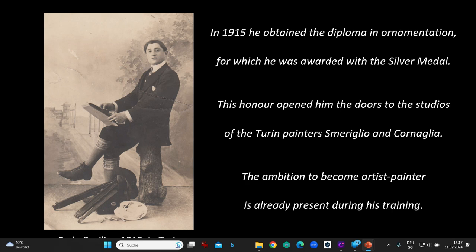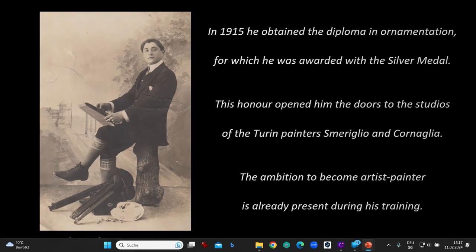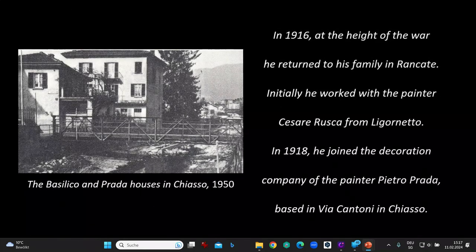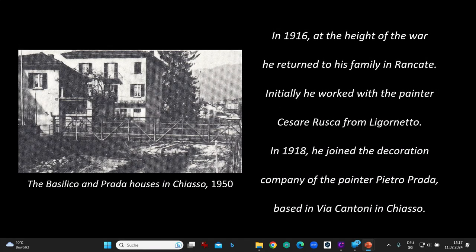In 1915, he obtained a diploma in ornamentation, for which he was awarded the silver medal. This honor opened him the door to the studios of the Turin painters Smerilio and Cornelia. The ambition to become an artist-painter was already present during his training. In 1916, at the height of the war, he returned to his family in Rancate, initially working with the painter Cesare Rusca from Ligorneto.